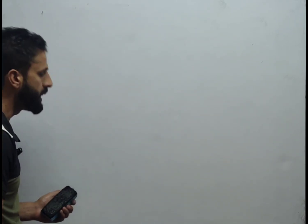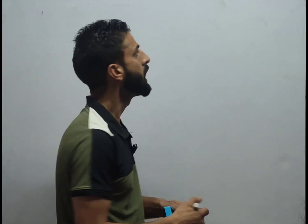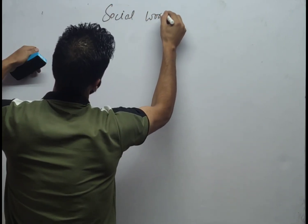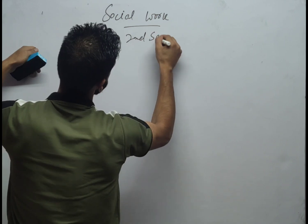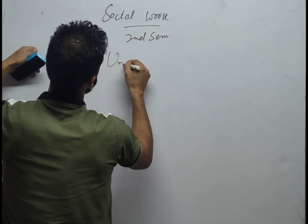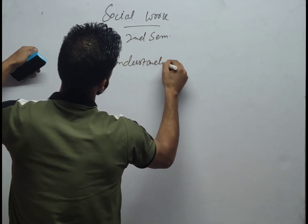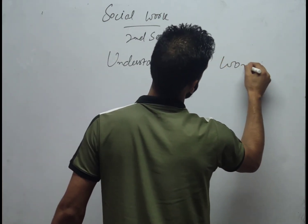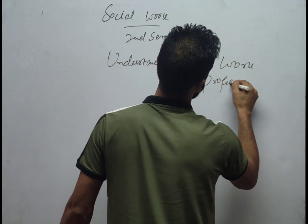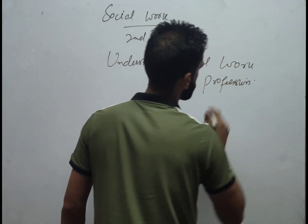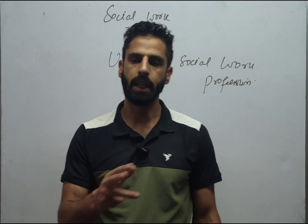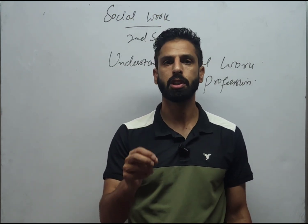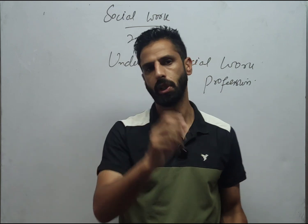Our paper is 'Understanding Social Work Profession.' The minor paper is Social Work for the second semester. We have three units: first is Society and Social Work, second is Basic Concepts Related to Social Work, and third is Philosophy of Social Work Profession.